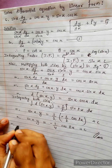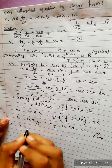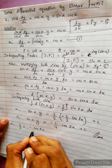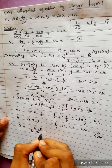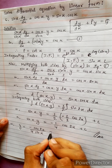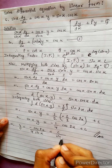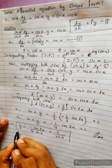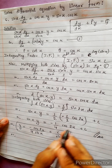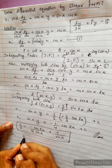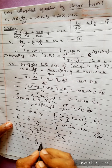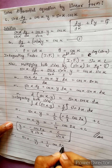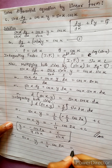Therefore y equals minus cos 2x divided by 4 sin x, plus c divided by sin x. Equivalently, sin x into y plus (1/4)·cos 2x equals c. This is the final answer.